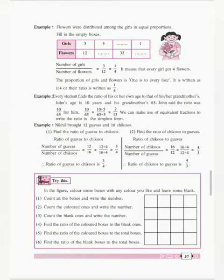For these numbers 12 and 16, we can divide both by 4. 12 divided by 4 will give you 3 and 16 divided by 4 will give you 4. Finally, the ratio of guavas to chiku is equal to 3 upon 4.